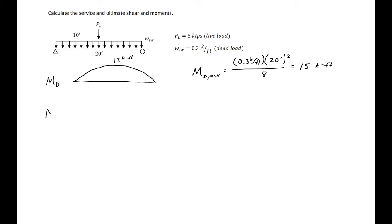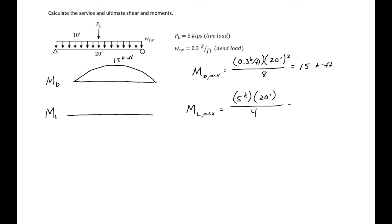For the live load moment, with a point load at mid-span, the maximum moment is PL/4. Our P is 5 kips and L is 20 feet, so the live load moment at mid-span is 25 kip-feet. This gives a triangular shape with straight lines from each support to 25 kip-feet at mid-span.